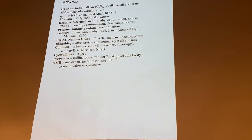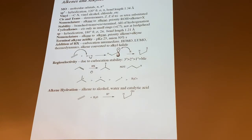Alkanes — SP3 hybridization, of course. The names, the basic ones, branching, properties, NMR. NMR of molecules will be on the final. Alkenes, alkynes — SP2 and SP hybridization. Different geometries there. And regioselectivity for the reactions.